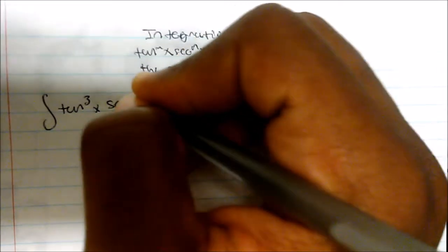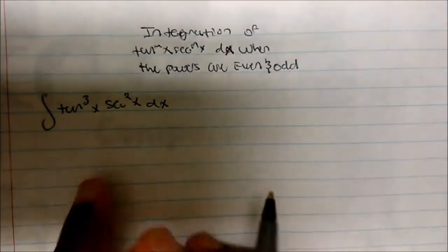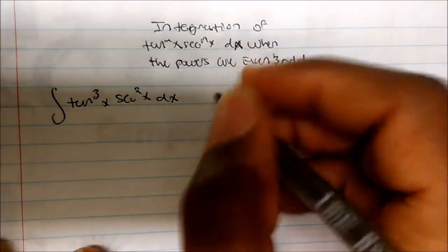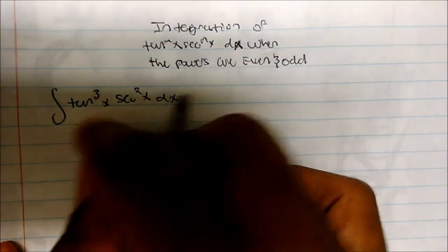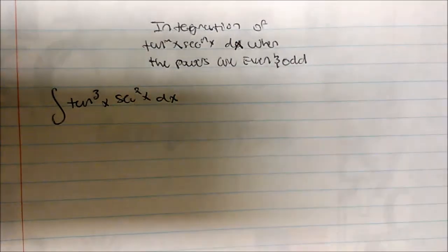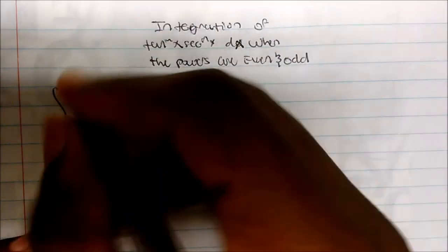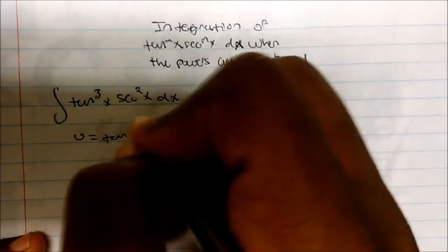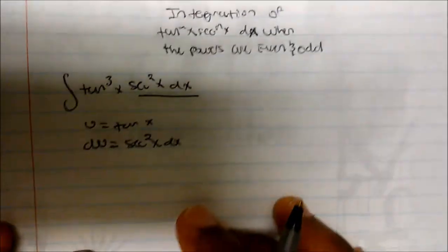So what if we're asked to take the integration of tangent to the 3rd of x, secant squared of x dx? Well notice we have an even power and an odd power. To me it looks as if I have a u-substitution here. So the first thing I always look for is u-substitution. And so if I set my u to be tangent of x, then the derivative of that is actually secant squared of x dx, which is exactly what we have here.